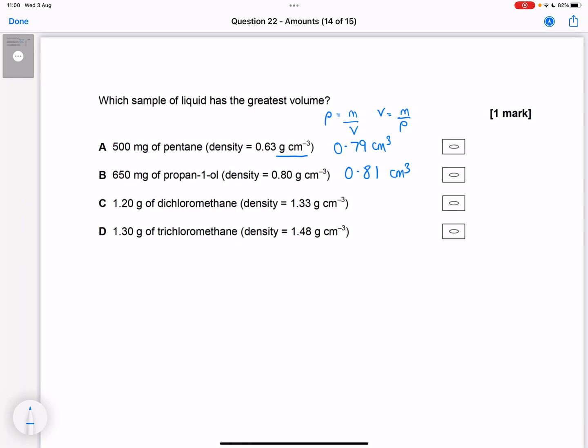1.2 divided by 1.33, that's 0.90 centimeters cubed. 1.3 divided by 1.48, that's 0.88 centimeters cubed. So which has the greatest volume? We've got answer C is the biggest answer.